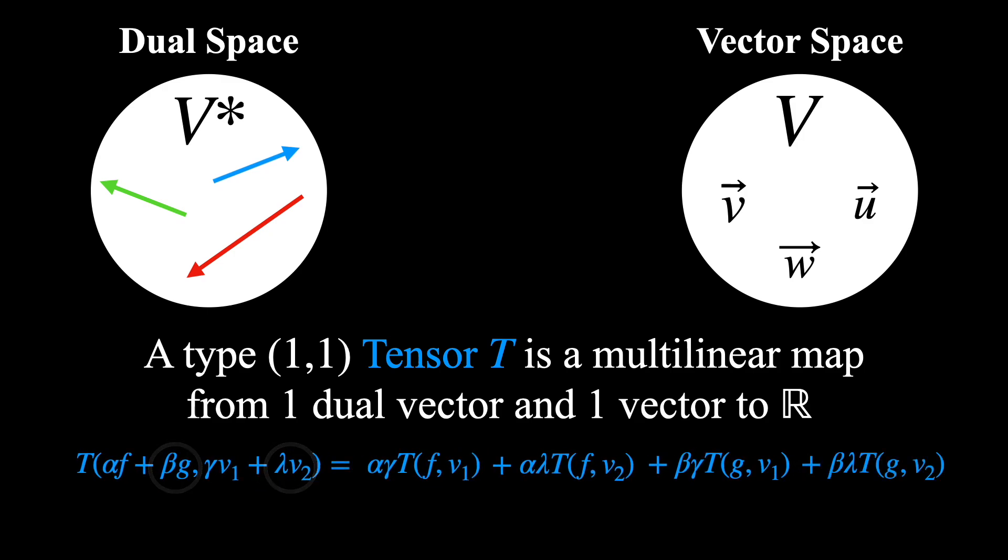And remember, a tensor is a map to the real numbers, so this whole thing must be a real number. And the same thing goes for each of these expressions. So that is a type (1,1) tensor.